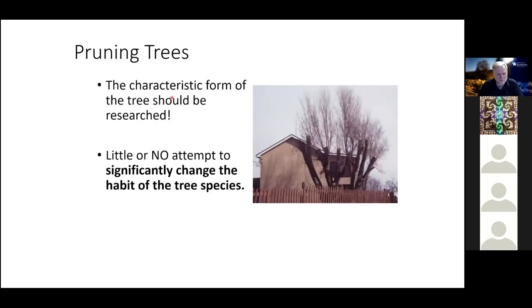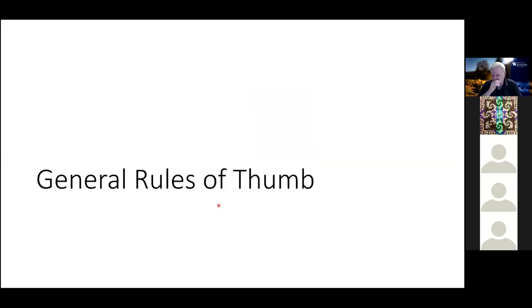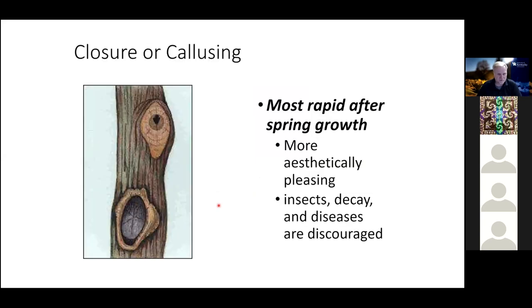The characteristic form of the tree should be researched — you should understand what the mature tree is going to look like. If it's a white pine or a maple, it will have a certain shape, and you need to accept that. You shouldn't try to change the overall form of the tree. Let's talk about some general rules of thumb, because if you have those down, it gives you a good framework to think about pruning trees and shrubs.